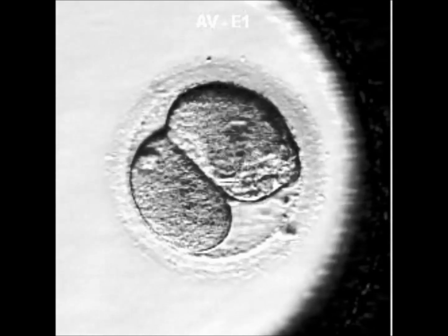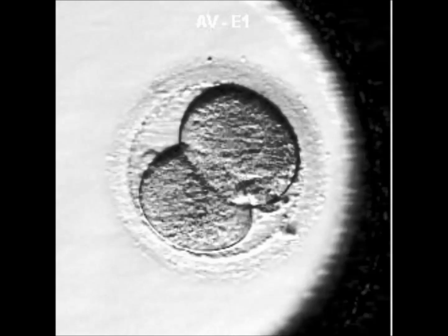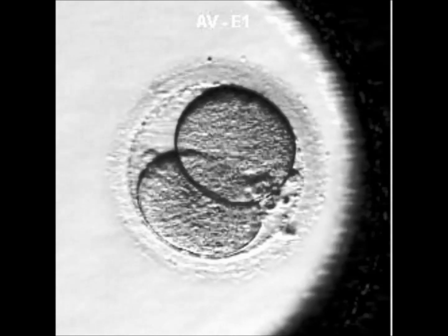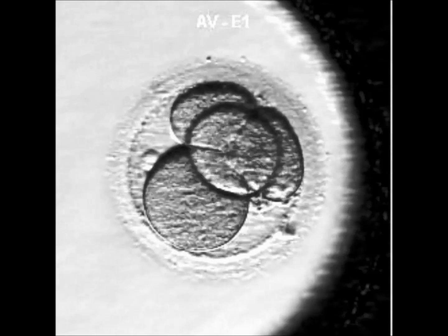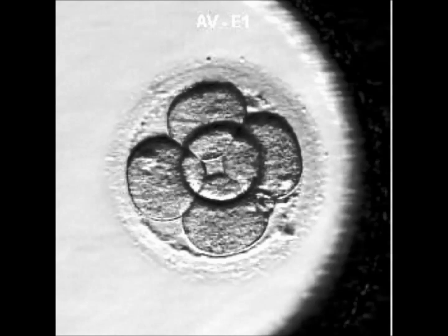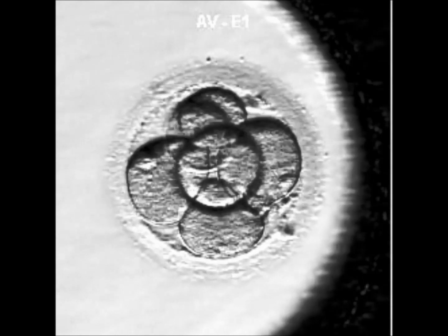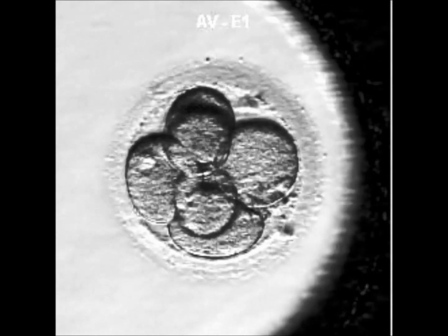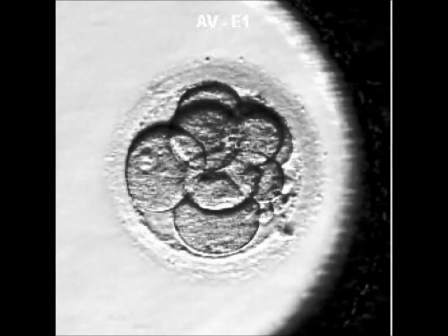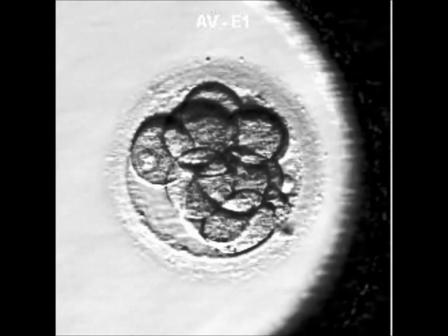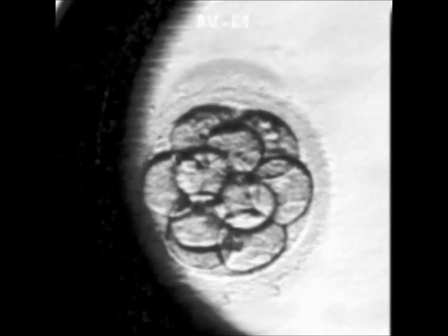This embryo divides normally into a two cell grade one embryo, but the right cell splits directly into three. Those three cells are abnormal. The left cell divides normally again into two, giving the appearance of a healthy five cell embryo when in reality it is mosaic, containing normal and abnormal cells. The rest of the division gives the appearance of a top grade embryo although in this case fails to reach the blastocyst stage.